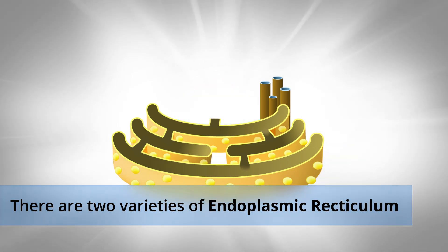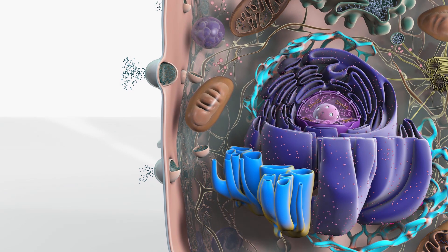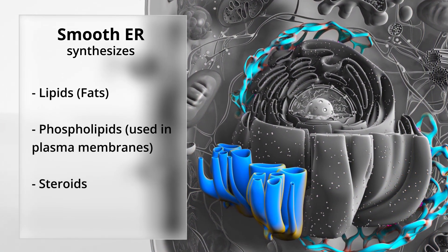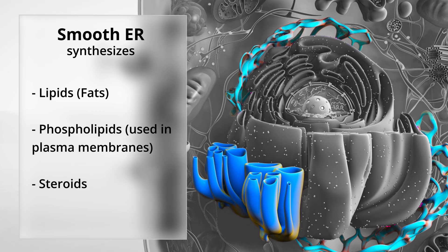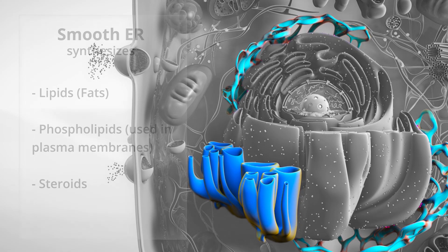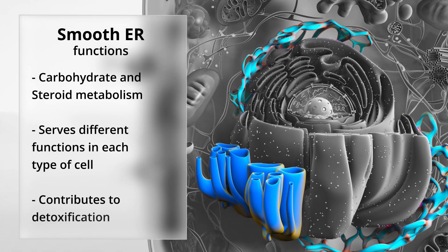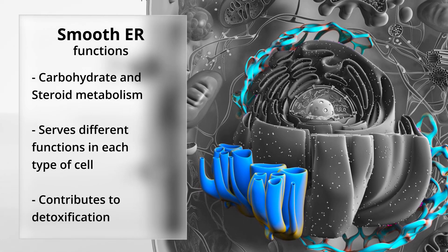There are two varieties of endoplasmic reticulum: smooth ER and rough ER. Smooth endoplasmic reticulum is responsible for synthesizing lipids, phospholipids used in plasma membranes, and steroids. Smooth ER functions in several cellular processes such as carbohydrate and steroid metabolism.